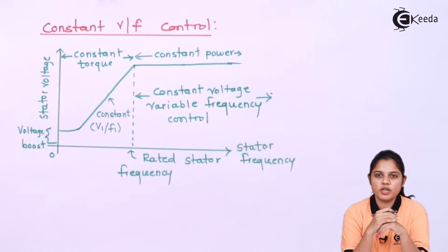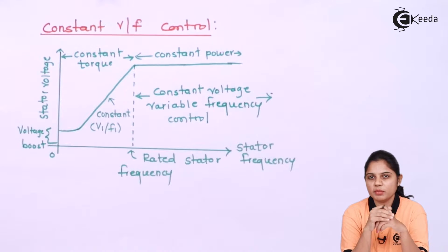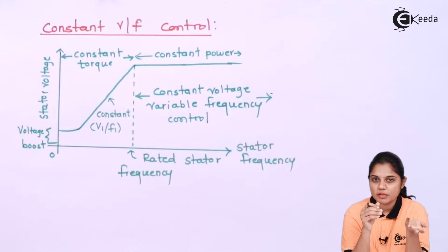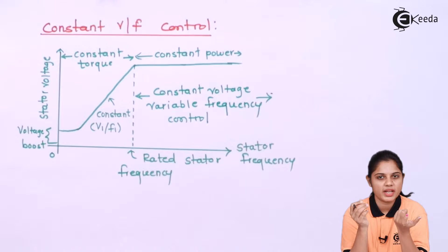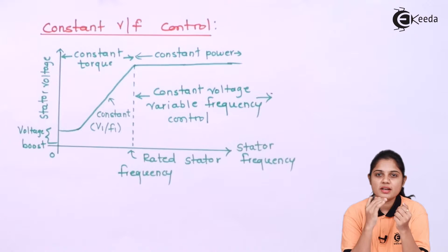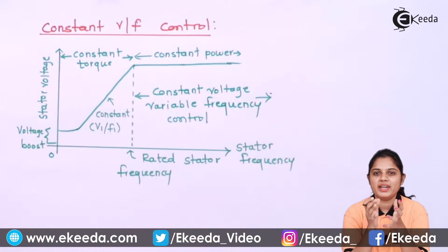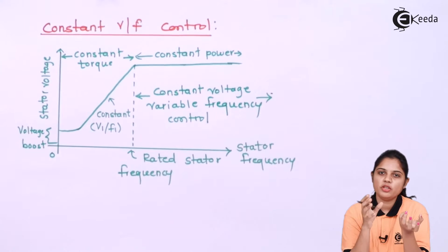As mentioned previously, you can control the speed of the motor by changing the parameters of either the stator or rotor. Those parameters are the external supply voltage or the supply frequency. So V stands for supply voltage and F stands for supply frequency — this is the ratio of voltage and frequency.